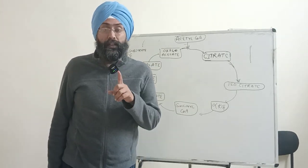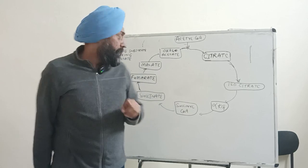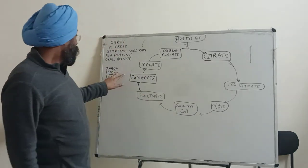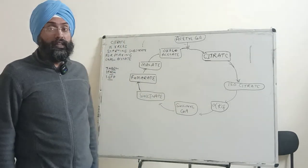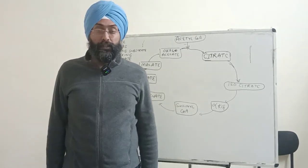Remember that there are three NADH produced, one FADH, and one GTP produced during the TCA cycle.